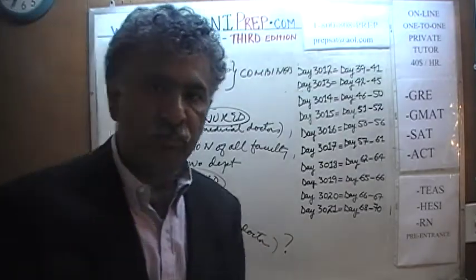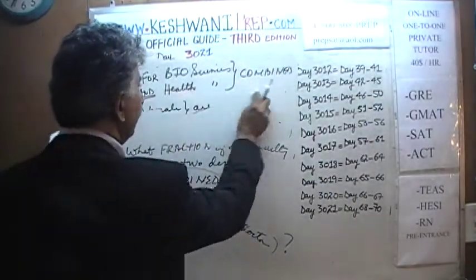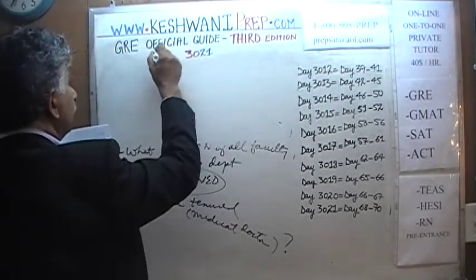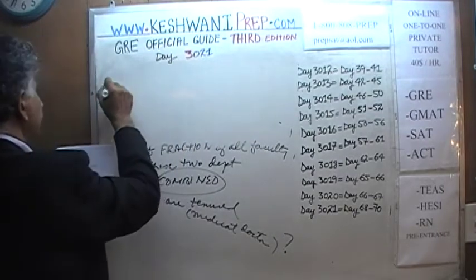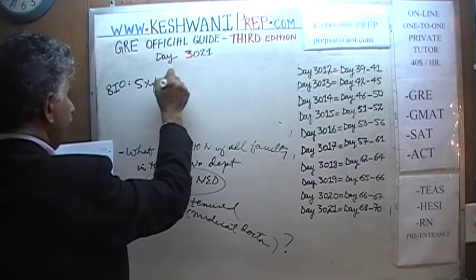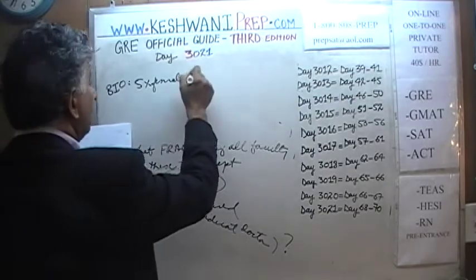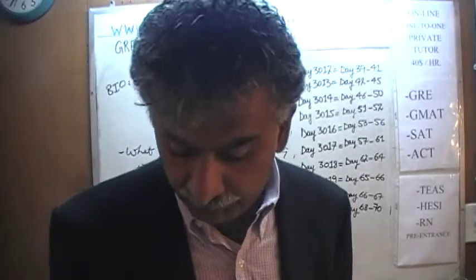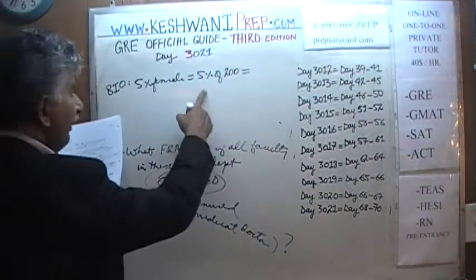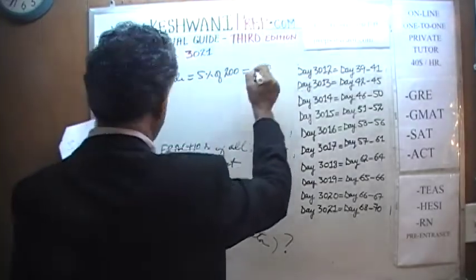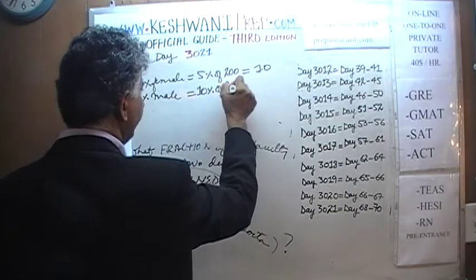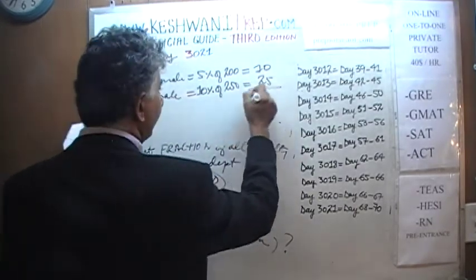Let's start with Biology. In Biology, 5% of female faculties — 5% of 200 — equals 10. And 10% of male faculties — 10% of 250 — equals 25. So Biology gives us 10 female and 25 male faculty. Now let's move on to Health Sciences.